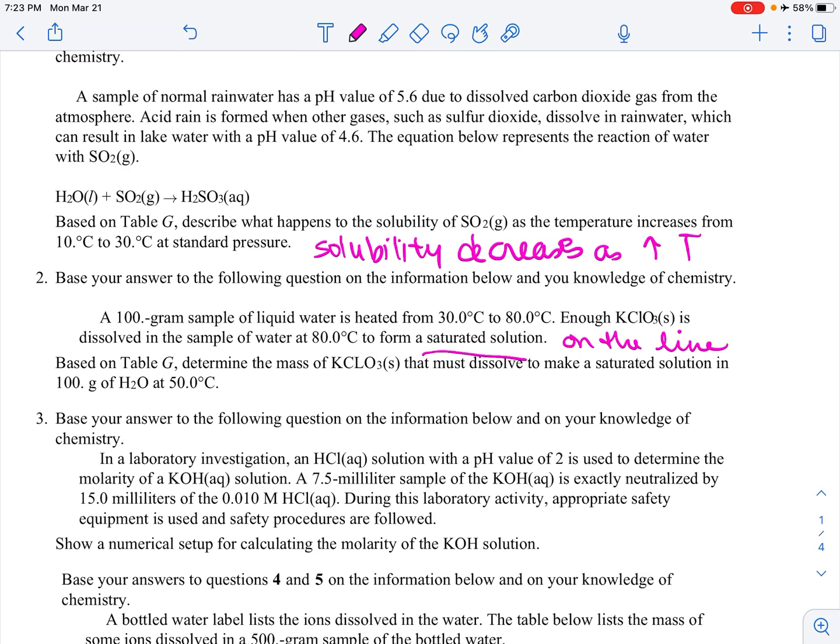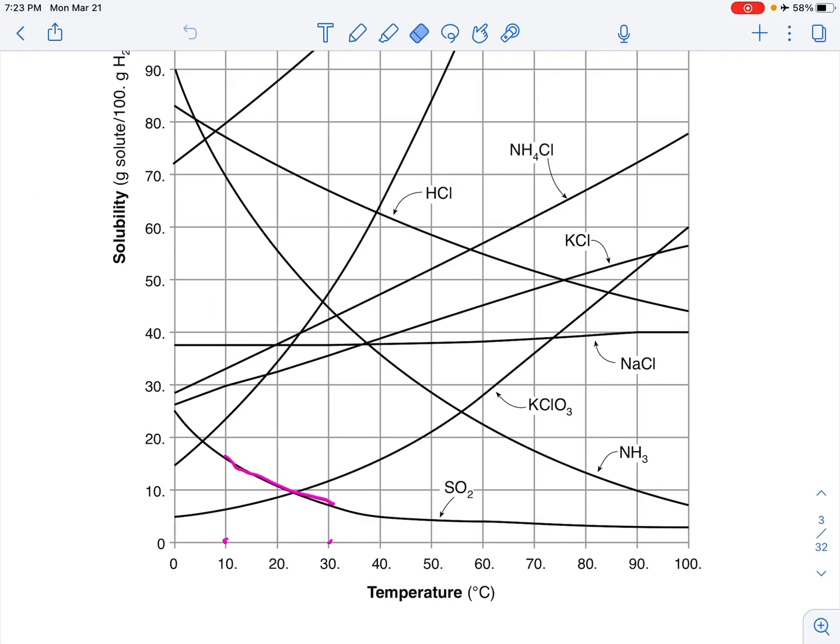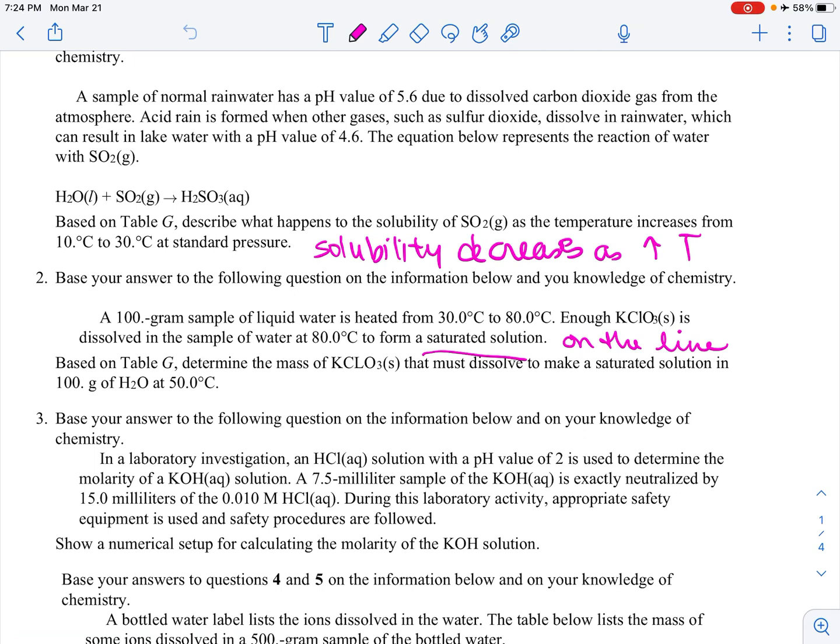So now we want 50, so KClO3 at 50. So, erase this. KClO3 at 50 looks like just a little bit above, maybe 21 grams, because if you were going to go over here, something like that. 21, so I'm going to say 21 grams. Now, the answer key, according to the region, says any value from 20 to 23 grams. So you get some leeway.